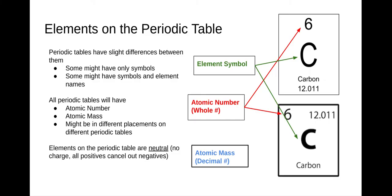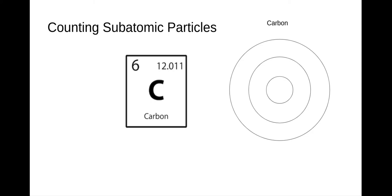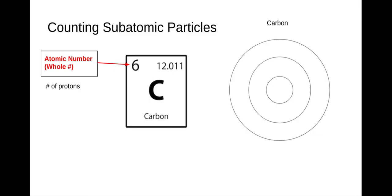And then we have this decimal number, and that's the atomic mass. I always remember the mass because it looks more like a mass — it looks more like something you would weigh or measure out on an electronic balance. So let's count the subatomic particles for carbon. The atomic number, which is the whole number, tells us the number of protons within each atom. So in carbon, we have six protons, and the protons sit in the nucleus.